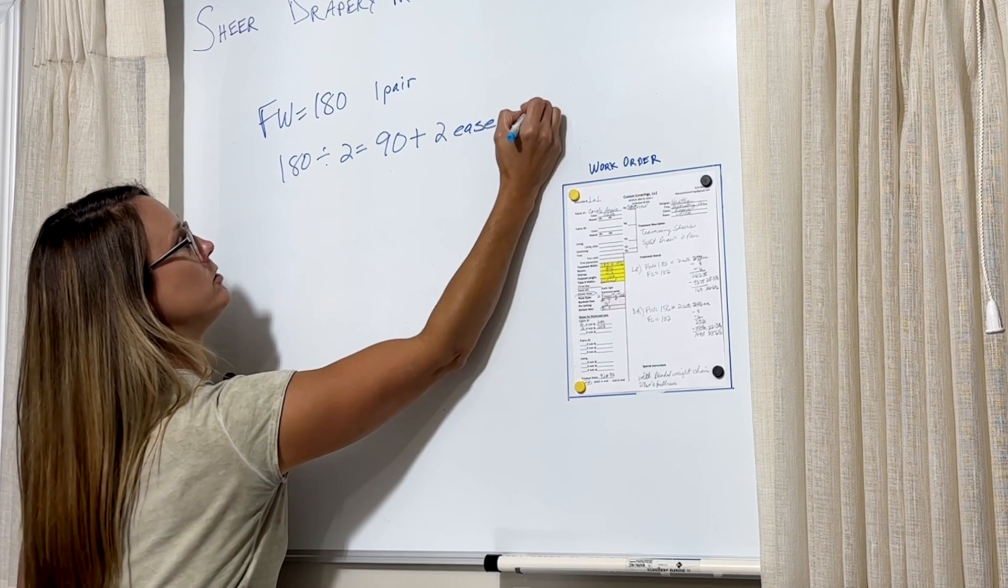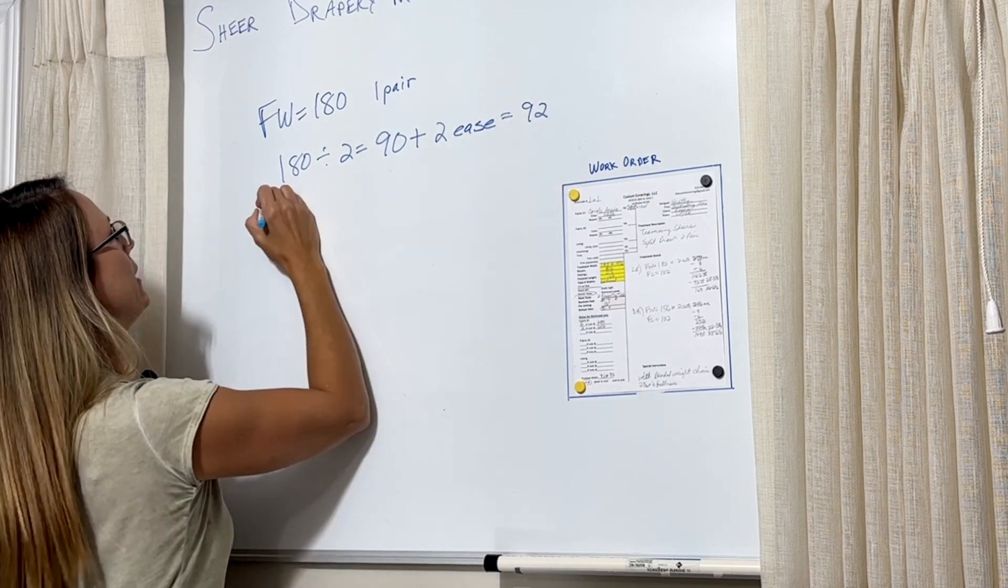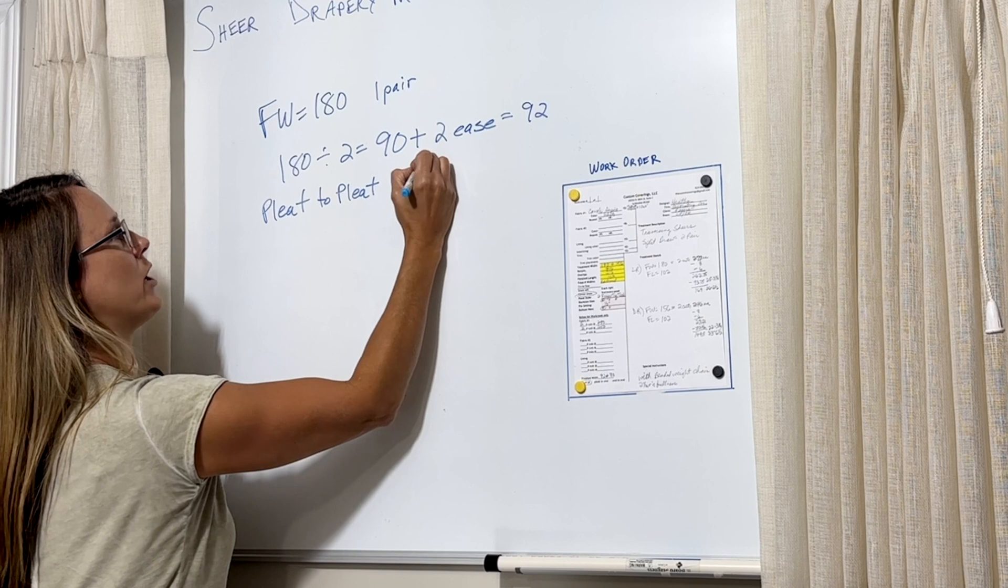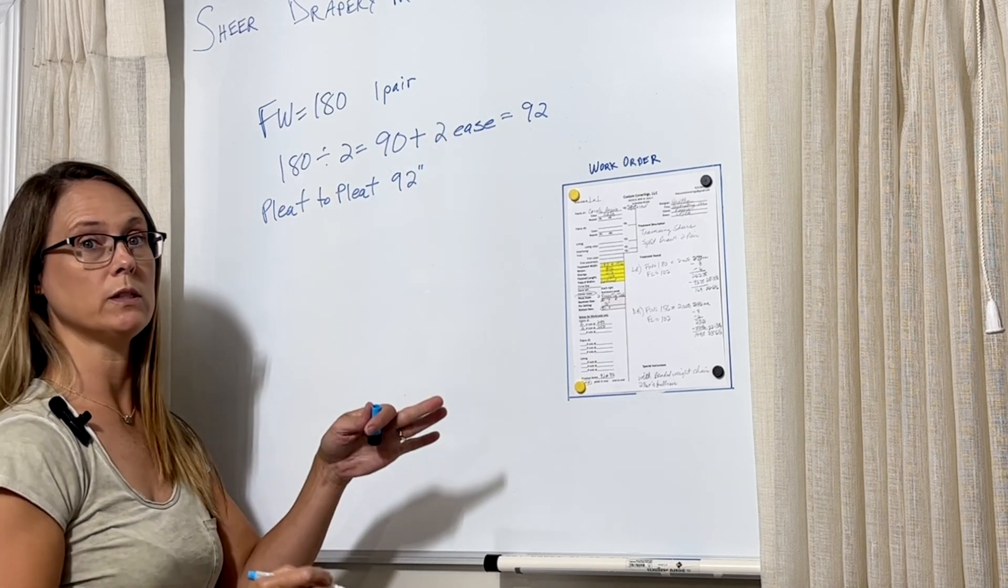So 90 plus 2 is 92. So that's my pleat to pleat, how much I want that panel to measure once it's all pleated.